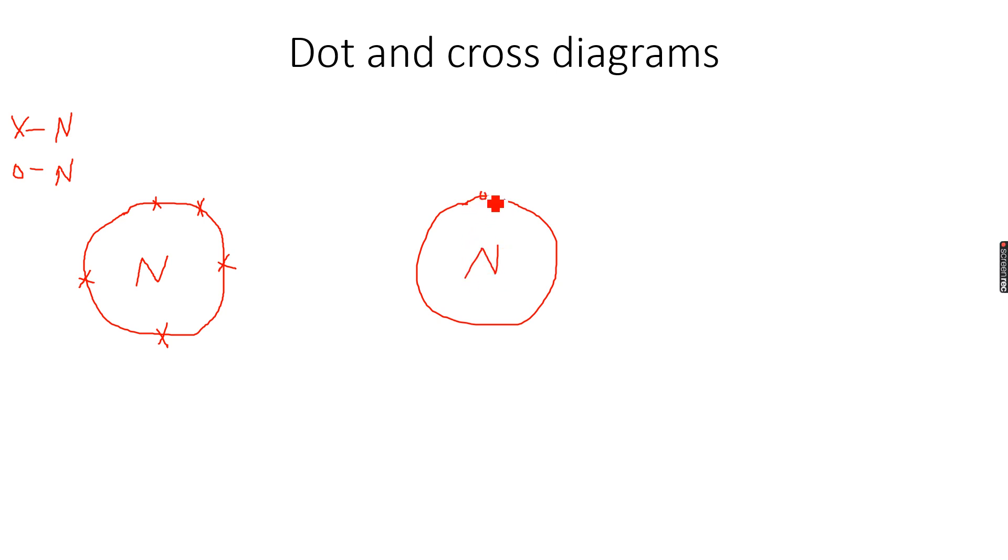So we know that nitrogen also exists as N2. Let's see why it exists as N2. Now you can see that both nitrogen atoms, they want to gain three electrons each, so that they can complete their octet. So they will do this by sharing three pairs of electrons.